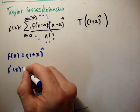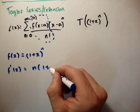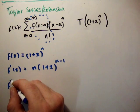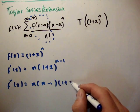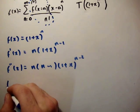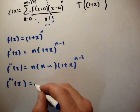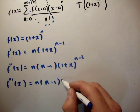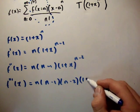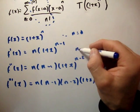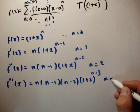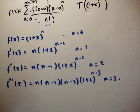The second derivative is going to be equal to n times n minus 1, 1 plus x to the n minus 2. The third derivative of x is equal to n times n minus 1 times n minus 2 times 1 plus x to the n minus 3. Note here, this n is equal to 0, n is equal to 1, n is equal to 2, n is equal to 3. All right? So, where do we go from here?